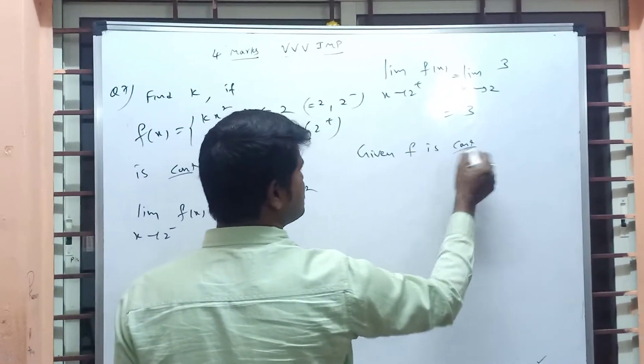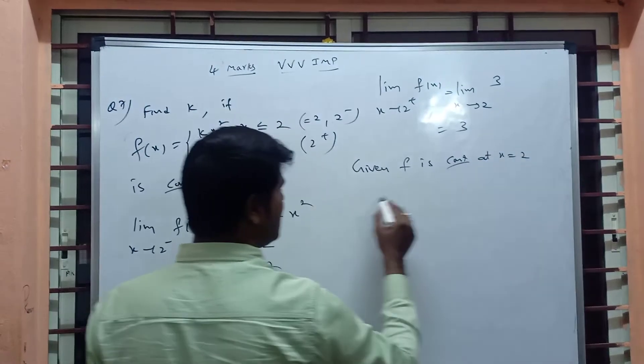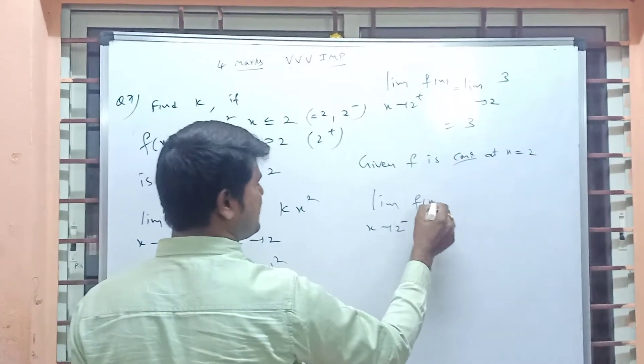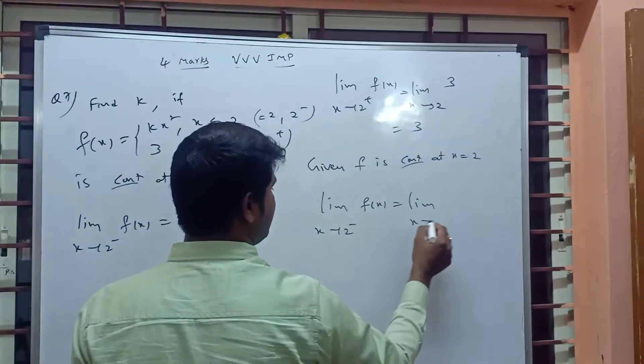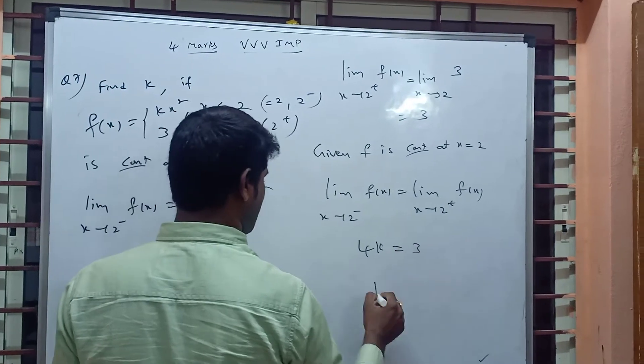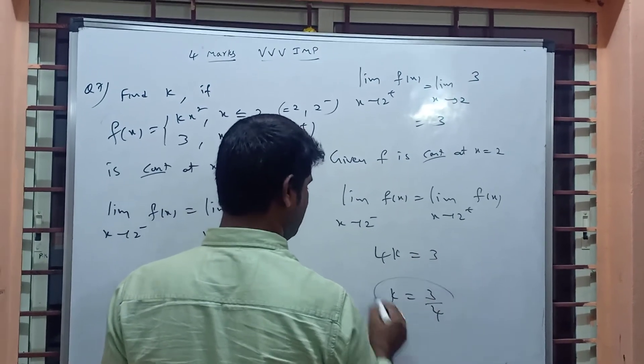Given f is continuous at x equals 2, that means left hand is equal to right hand. Limit x tends to 2 minus f(x) equals limit x tends to 2 plus f(x). That means 4k equals 3, k equals 3 by 4.